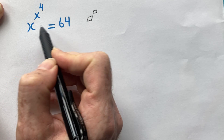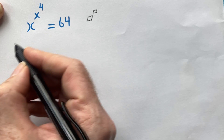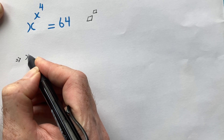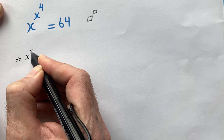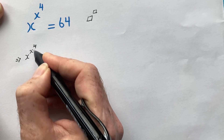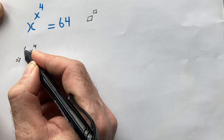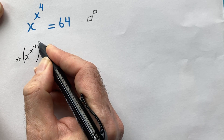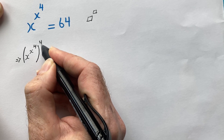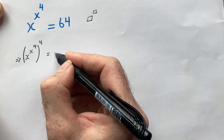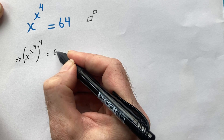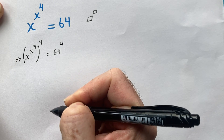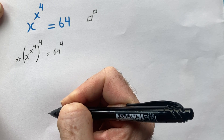To do this, I'm going to raise both sides to the power of 4. So the left side becomes x to the power of x to the power of 4, all raised to the power of 4, and the right side becomes 64 to the power of 4.